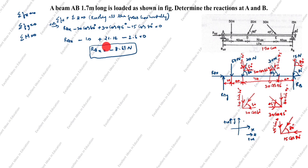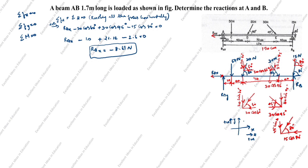The negative sign for RAX shows that the assumed direction of RAX was wrong. The correct direction is opposite to the assumed direction, which means RAX acts toward the left at A.